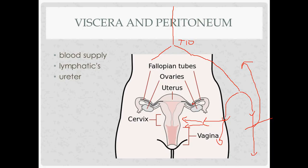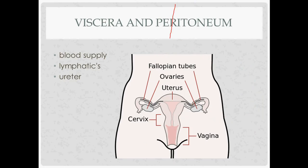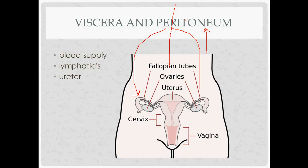The ovaries have a different blood supply. The ovarian arteries come directly off the abdominal aorta. On the left side, the venous drainage goes into the left renal vein instead of directly back into the inferior vena cava. A way to remember that is things on the left are a little different — like in the lung you have the lingula instead of three normal lobes — and similarly the left ovarian vein drains into the renal vein rather than directly into the IVC.